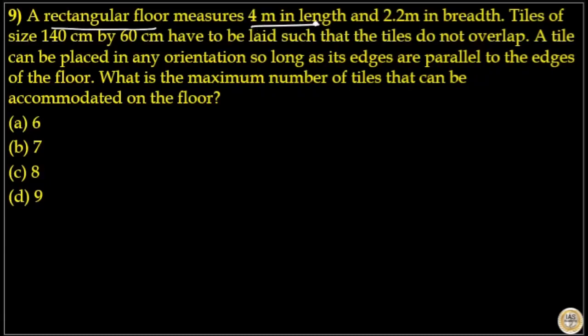A rectangular floor measures 4m in length and 2.2m in breadth. Tiles of size 140cm by 60cm have to be laid such that tiles do not overlap. A tile can be placed in any orientation so long as its edges are parallel to the edges of the floor. What is the maximum number of tiles that can be accommodated on the floor?